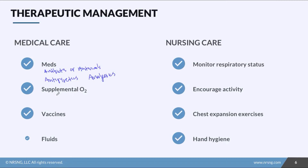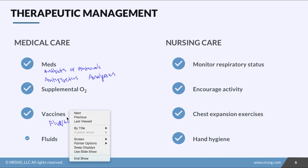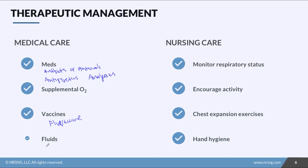We're also going to give supplemental O2 as needed, and vaccines. All patients should get the flu vaccine as long as it's indicated — this is especially important for our elderly population and those at risk. We're going to give fluids and encourage PO intake, aiming for up to three liters per day, which will help thin out secretions and make them easier to clear.